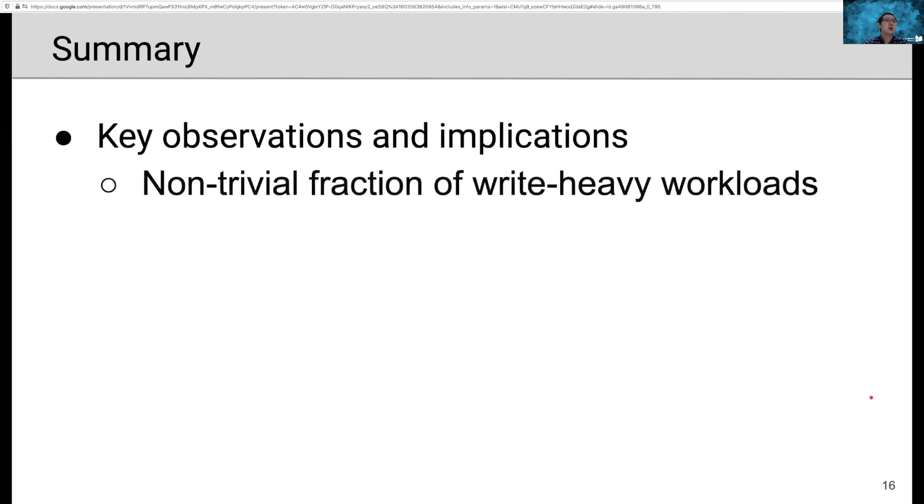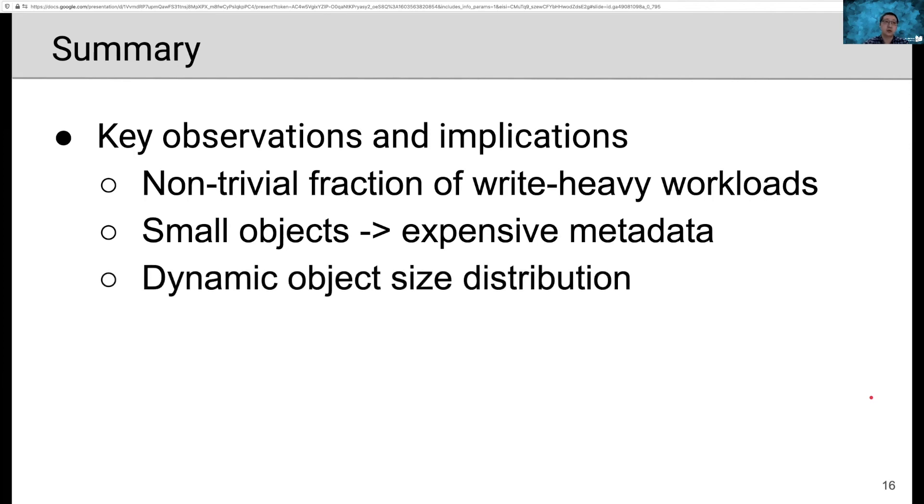As a summary of today's talk, we observed a non-trivial fraction of write-heavy workloads. And we suggest that future research on in-memory caching should also optimize for write-heavy workloads, in addition to read-heavy workloads. Second, we observed that objects are small in in-memory cache. Therefore, per-object metadata is really expensive. Therefore, future research on reducing miss ratio should be seeking ways to reduce metadata size. Third, we showed that object size distribution is not steady. Instead, it's dynamic, showing both regular and irregular patterns. And this dynamic size distribution poses challenges to memory management techniques. Therefore, we think some revisits and innovations are needed for memory management in caching.